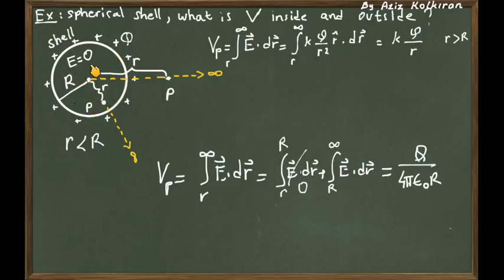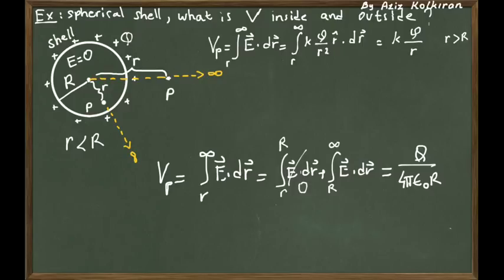This is true for every point inside the shell — the potential is KQ divided by capital R, because the electric field is equal to zero wherever you go inside this shell. If you have a charge in your pocket, wherever you go inside the shell you will not experience any force. If you don't experience any force, that means you don't change the potential, and the potential is the same as the potential of any point just on the surface.